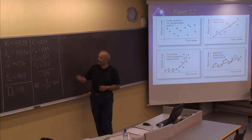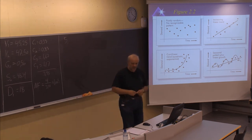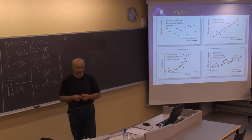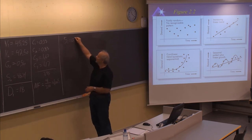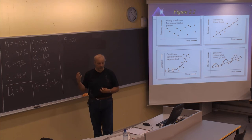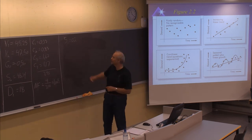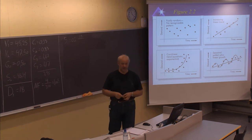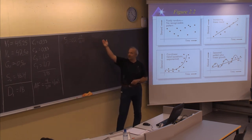We are now looking for the value of S1. The old value was 48.34. The new value will use the smoothing constant for the series, alpha, which according to the problem text should be 0.2. Alpha 0.2 is multiplied by the demand. Demand is 18, but you need to adjust by the seasonal factor for that particular season, which is 0.33.